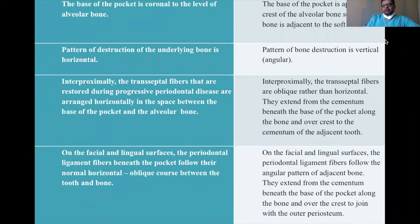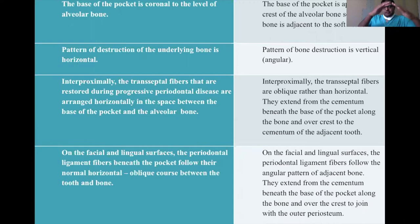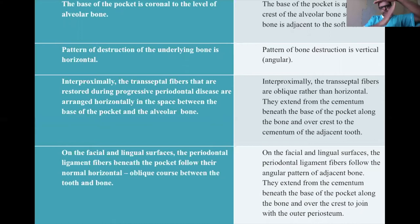In summary, the suprabony pocket has the base of the pocket coronal to the alveolar bone level, with horizontal bone destruction. The transeptal fibers are arranged horizontally because the bone is horizontal. In an infrabony pocket, the base is apical to the crest, bone destruction is vertical or angular, and the transeptal fibers are arranged obliquely. On the facial and lingual surfaces, the periodontal ligament fibers beneath the pocket follow the normal course in suprabony, but follow the angular bone loss pattern in infrabony.